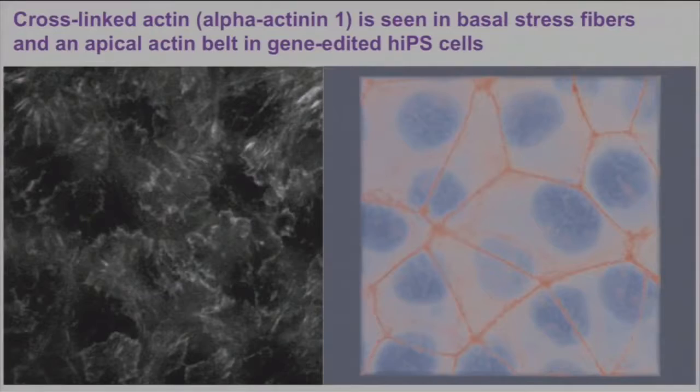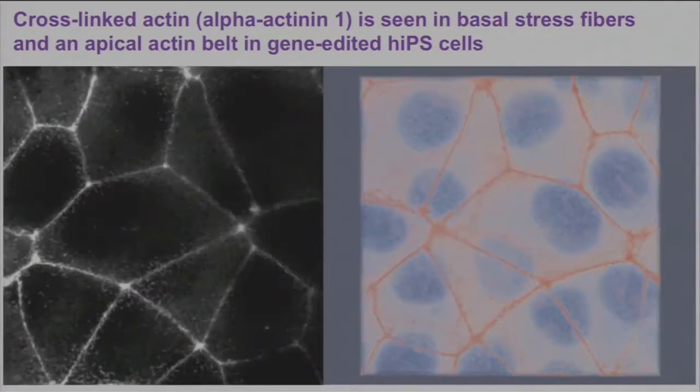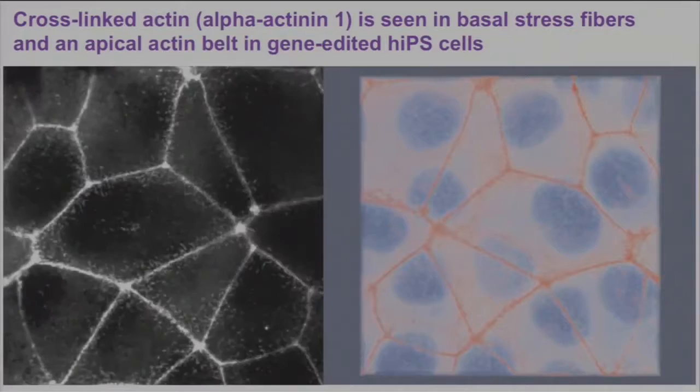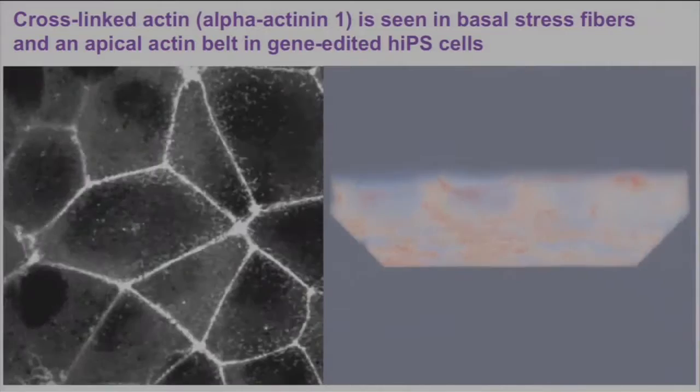Looking at cytoskeletal structure of filamentous actin as we go through the cell in Z, starting at the bottom, you can see actin stress fibers near the bottom of the cell. You see some localization of filamentous actin throughout, and then you see the actin belt right at the top of the cell, very indicative of an epithelial cell. And if you look at this in 3D, you can see that again.